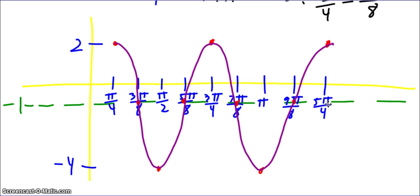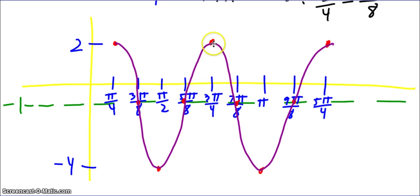It was a positive cosine curve, so it starts up at the amplitude, then comes down to the axis, then below, then back on the axis, then up, and so on for two periods.